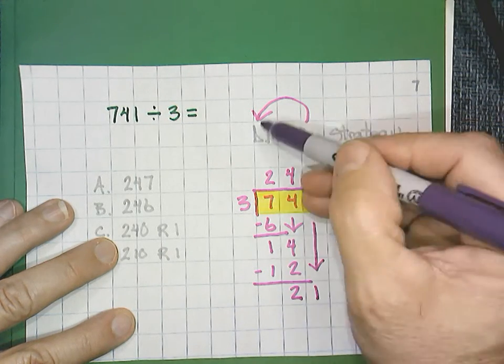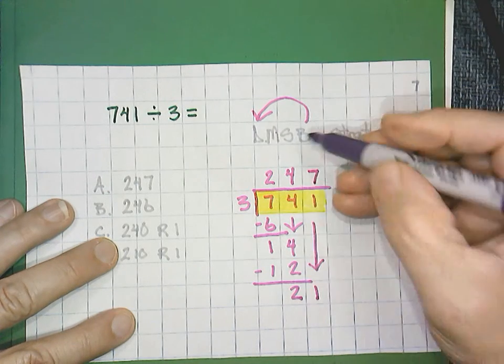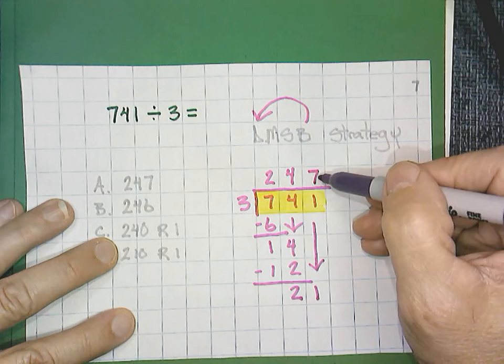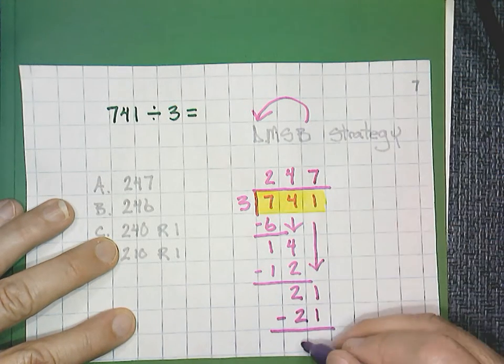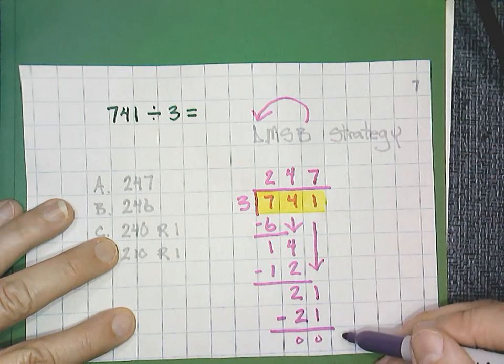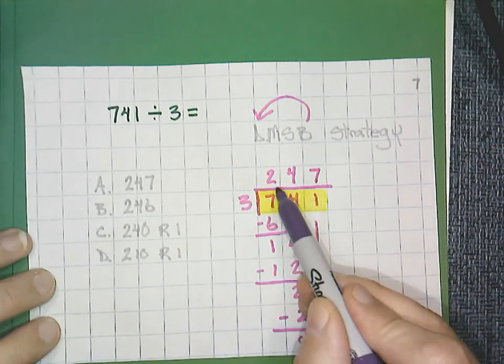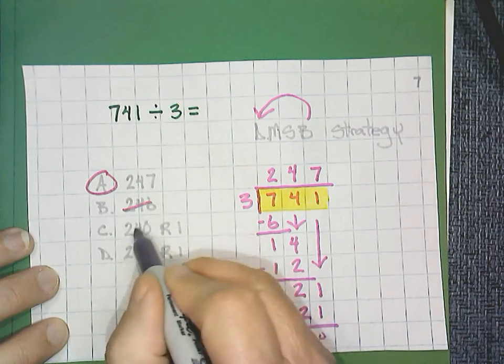21. And then we start all over again. 21 divided by 3 is 7. That's our divide. Now we multiply. 7 times 3 is 21. And then we subtract. Notice that we have no numbers to bring down. So our quotient is 247, which would be answer A.